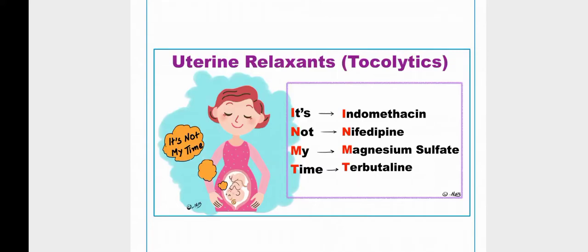In this video we will talk about uterine relaxant drugs. All the drugs which relax uterine musculature are called tocolytics. These drugs are used to suppress premature labor. The classical tocolytic is an oxytocin receptor antagonist, which includes atosiban. Atosiban is an antagonist of the oxytocin receptor, but it is not FDA approved, so it is not mentioned here.